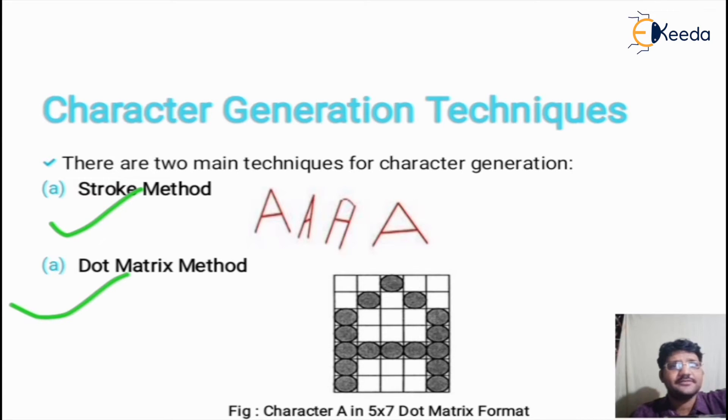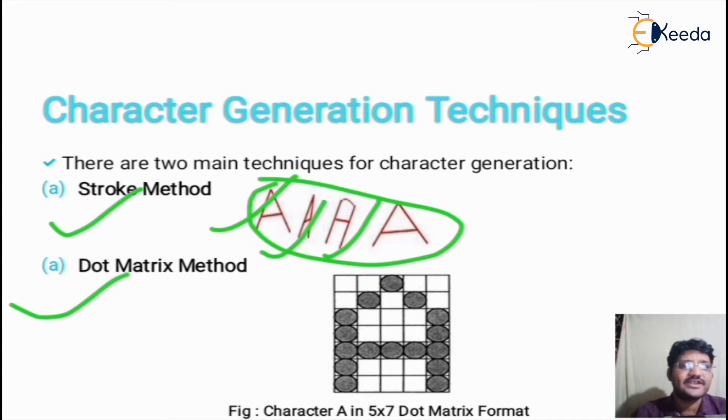In the diagram, you can see, by changing the values, we get different types of characters. By using arc, we get this type of character. By changing the values of parameters, we get different phases or types of characters.